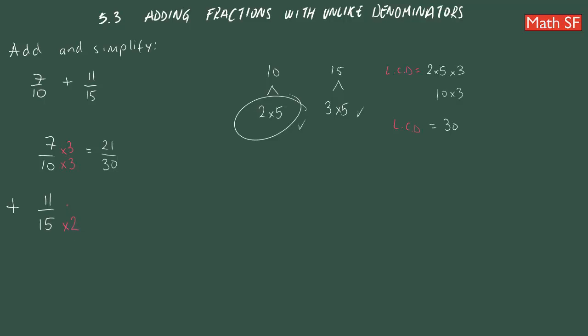So, what I do in the denominator, I must do in the numerator to keep having the same value of the fraction. 11 times 2 will be 22. 15 times 2 will be 30.